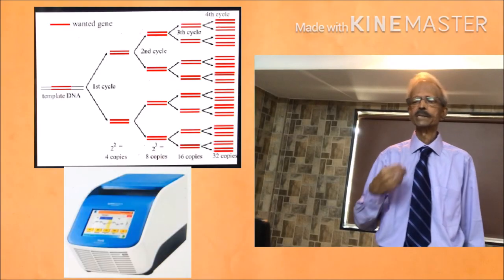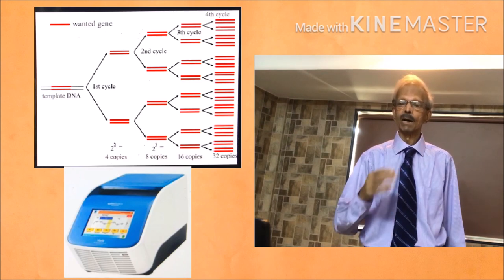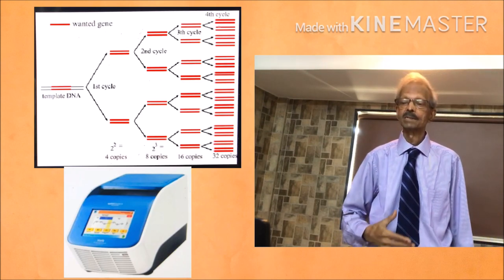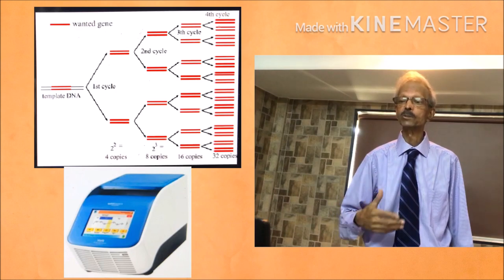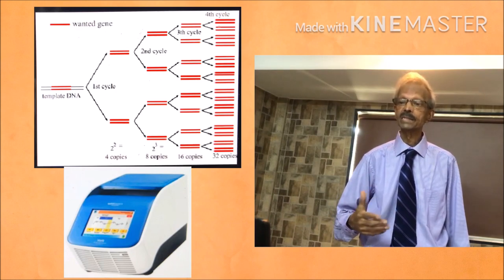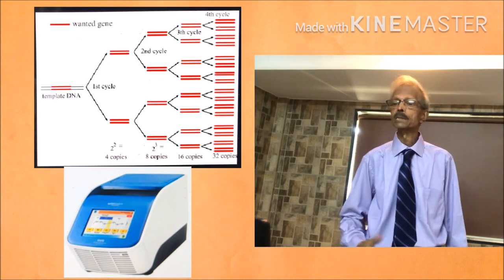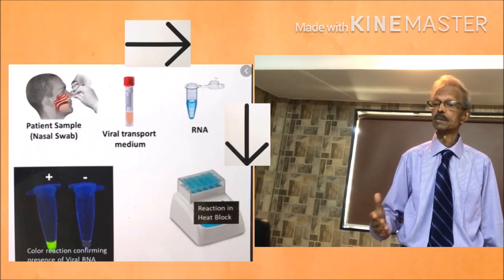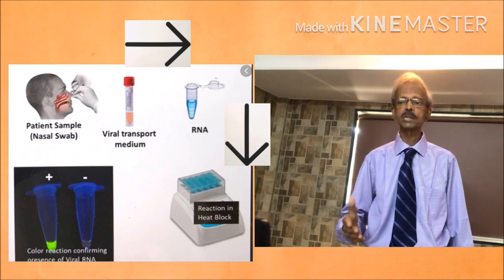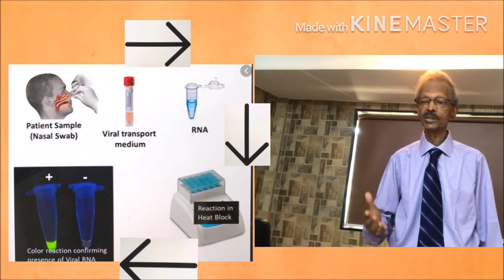It is important to note that RT-PCR requires thermal cycling — cycles of heating and cooling — to facilitate viral cDNA replication. RT-LAMP technique does not require these cycles and is performed at a constant temperature between 60 and 65 degrees centigrade.